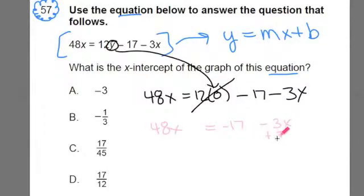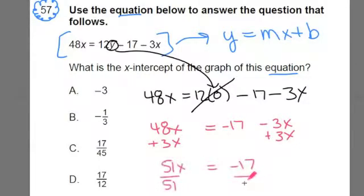So I'm left with 48x is equal to negative 17 minus 3x. I want to add the 3x to both sides. And you should be doing this on a scrap sheet of paper, doing this with me, solving for x when y is zero. We get 51x is equal to negative 17. Divide both sides by 51 so we can solve for x. Now we get an answer. It's negative 17 divided by 51.